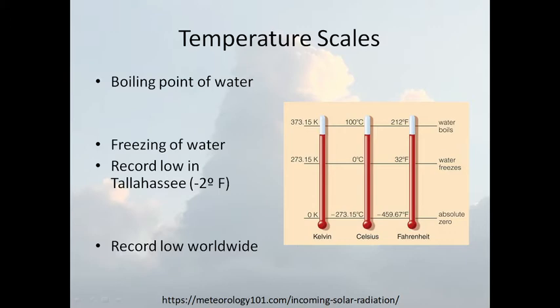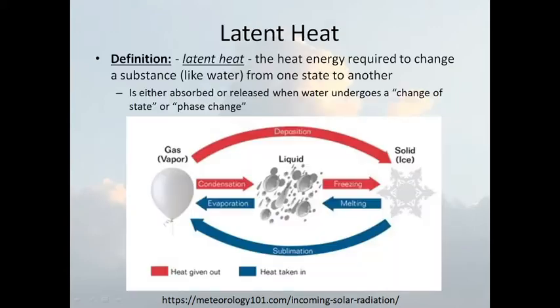There are the three temperature scales with different reference points for how temperature affects water — when water boils at a certain temperature, when it freezes, and then absolute zero, which is no motion at the molecular level at all. Latent heat is the energy required to change a substance, like water, from one state to another. Either heat is given out or heat is taken in. There are three phases: vapor, liquid, and solid — a phase change or change of state.